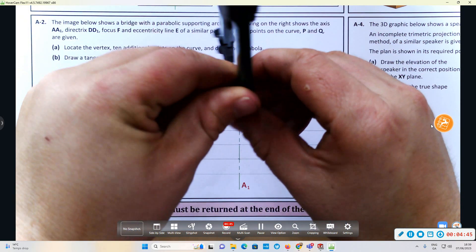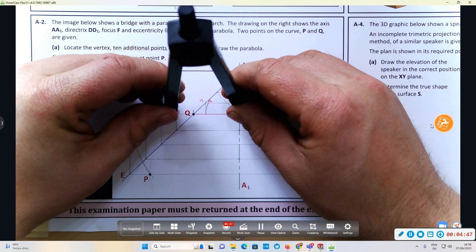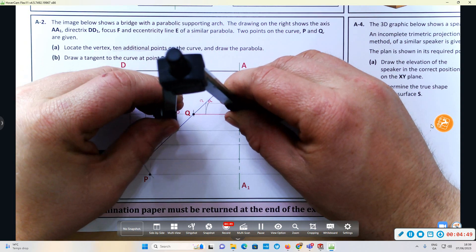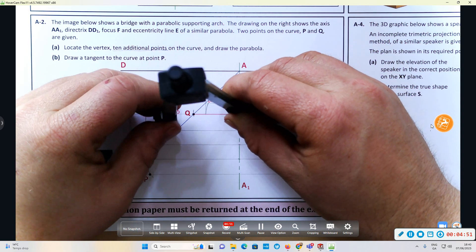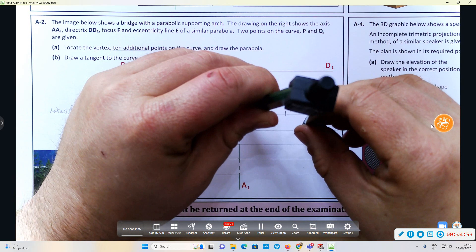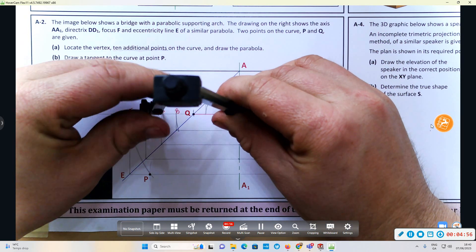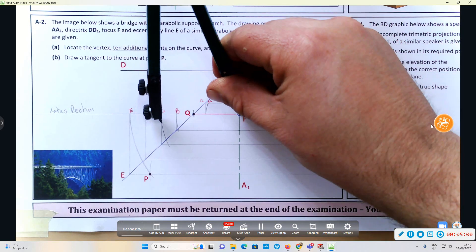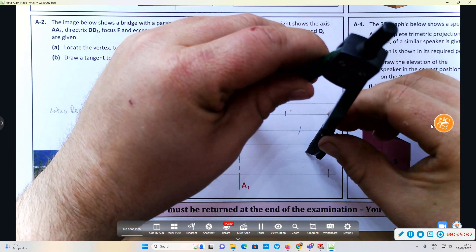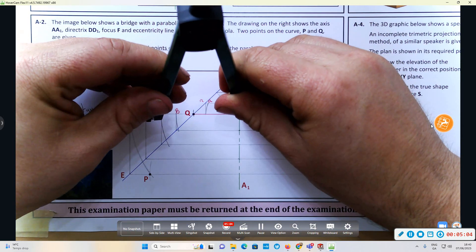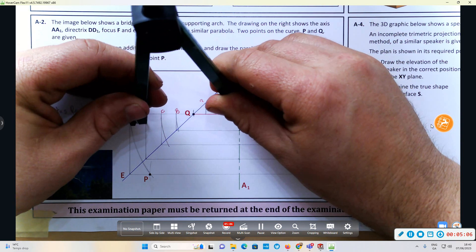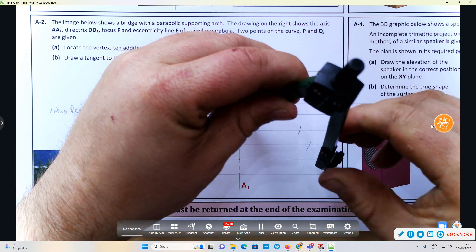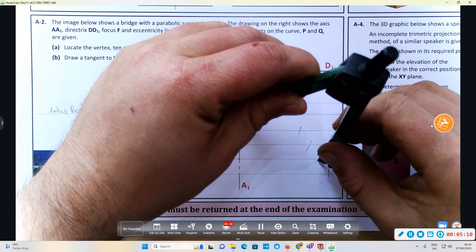I'm going to put my compass onto F and bring B back to the line or ordinate that's parallel to the directrix. Now on C, I'll swing back to there and then onto the opposite side down to D. There we have it there.